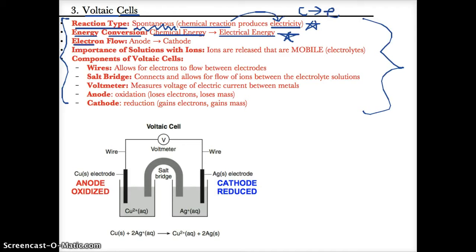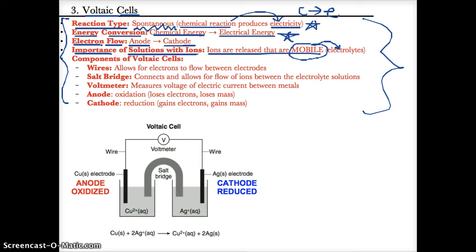Electrons always flow from the anode, where oxidation occurs, to the cathode, where reduction occurs, based on 'anox and a red cat.' Voltaic cells also have solutions with ions called electrolytes. The ions released when substances dissolve are mobile, and since they're mobile, they allow electricity to be conducted.